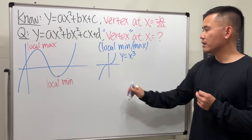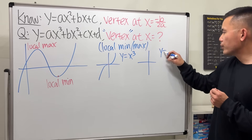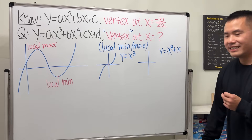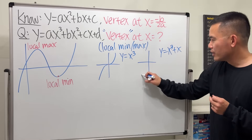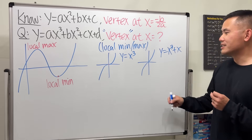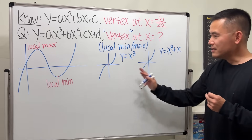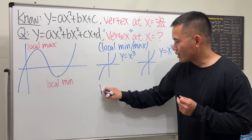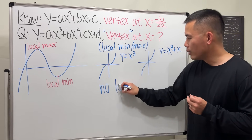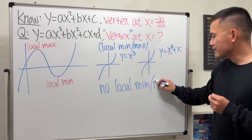Or maybe if you look at y equals x cubed plus x, the graph looks like this — it goes up and continuously keeps going up; it doesn't even stop. So these are not the cases that we are trying to get, because they have no local min or max.